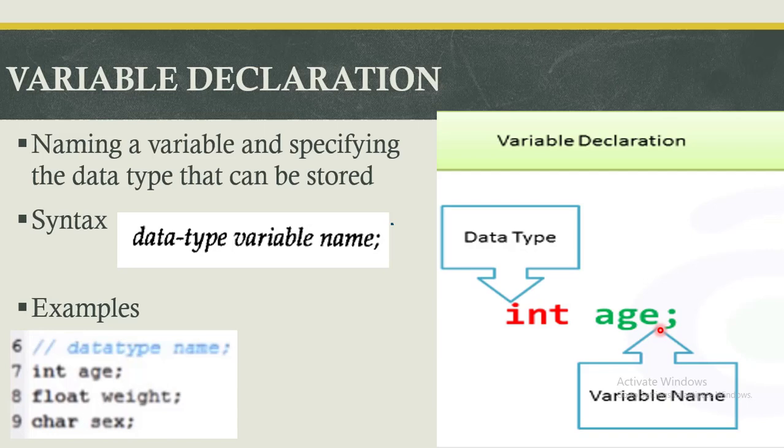Other examples: we've given int age. You can have weight, and maybe the weight could exist as a float. A float implies that the weight is going to have some decimal places, maybe a weight like 64.7 kilograms. In that case, the data type is going to be float, implying that the number has decimal places, and the variable name is going to be called weight. Or something like sex, and in this particular case, because it's of textual nature, it's of alphabetical nature, we define it as a character. That's how we normally declare our variables.